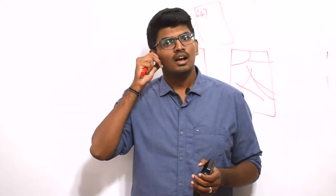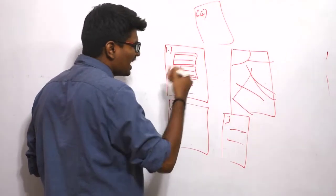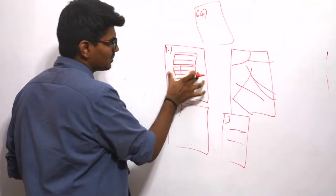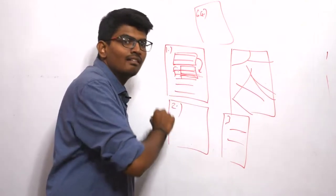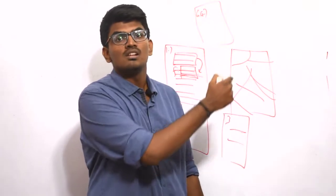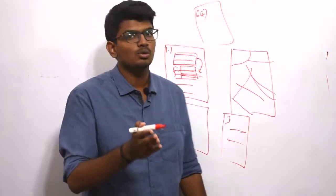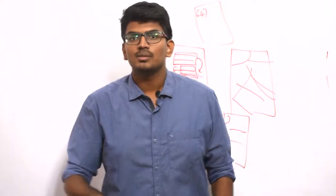The next suggestion is: when you start to solve a problem, write the formula first. You will already be writing the given values — just add one formula step. After writing the formula, substitute the given values. Don't directly substitute without writing the formula first. Write the formula, then in the second step substitute. This will be very useful when you are revisiting — your silly mistakes can be avoided. Even if you made a silly mistake, when you revisit you might catch it: oh, I substituted in the wrong formula — you will find it.